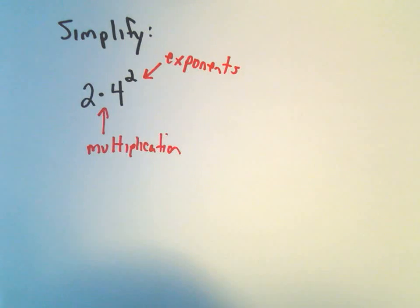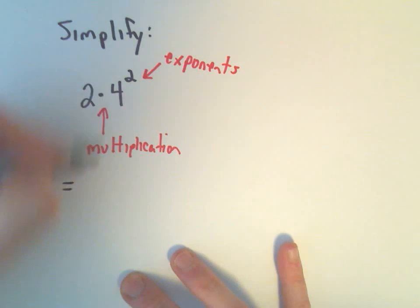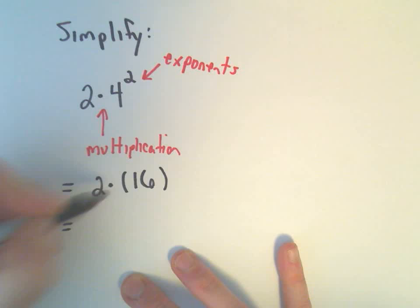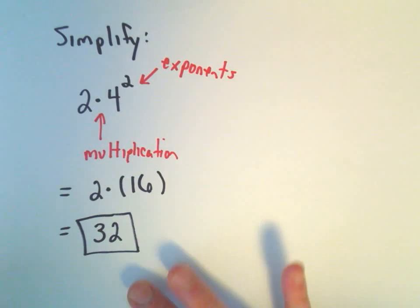So we'll do the exponents. So remember 4 squared, that's the same thing as 4 times 4, which would give us 16. And now we can simply do 2 times 16, which is 32. And that'll be our solution.